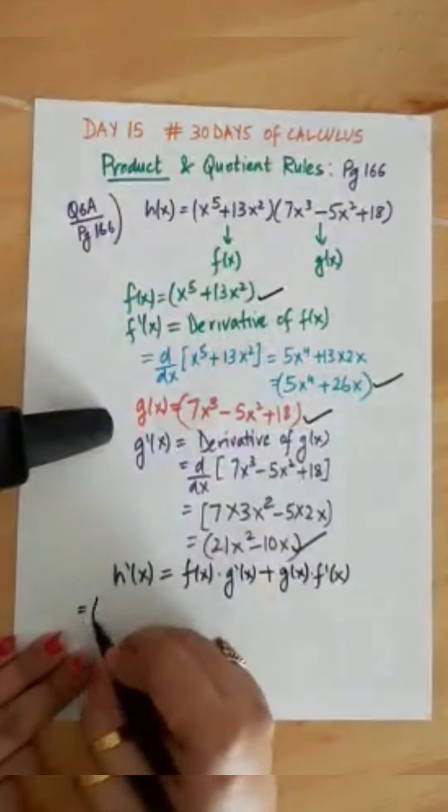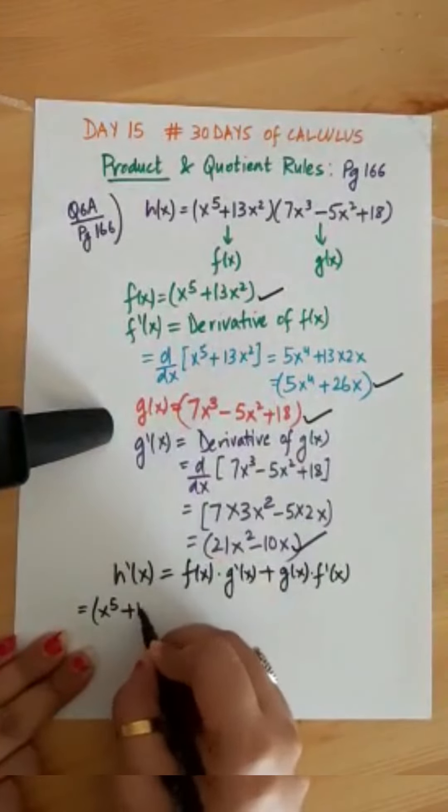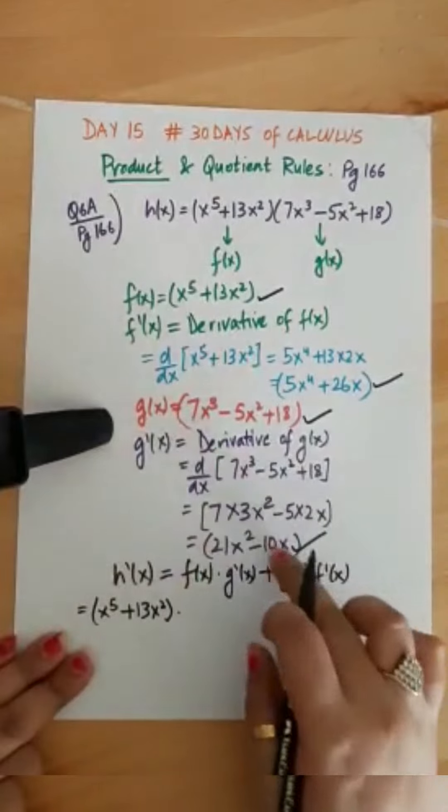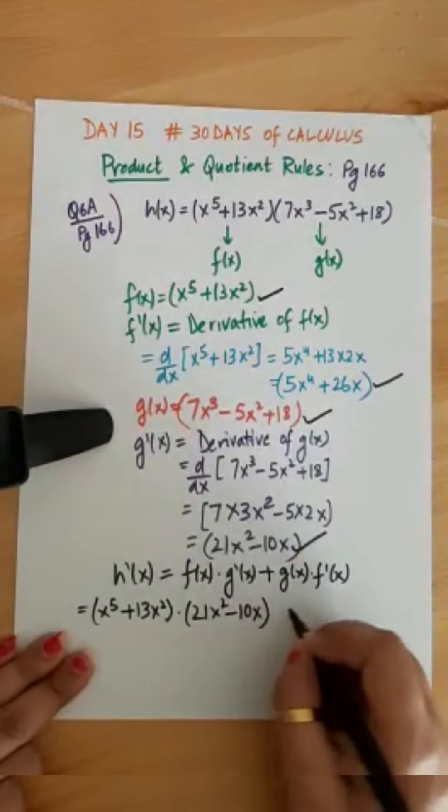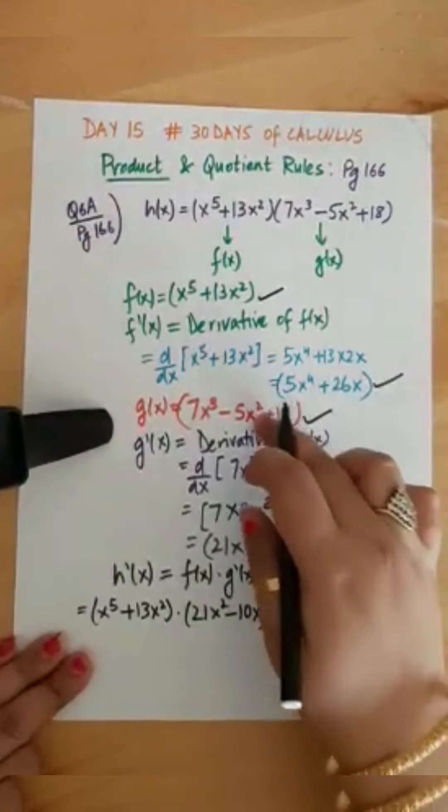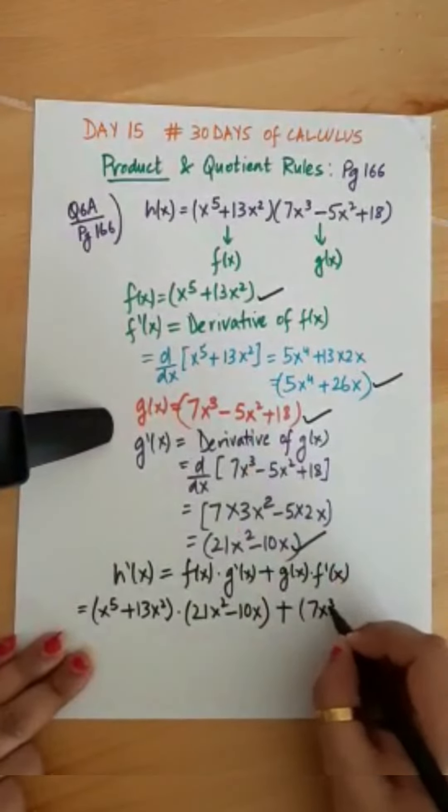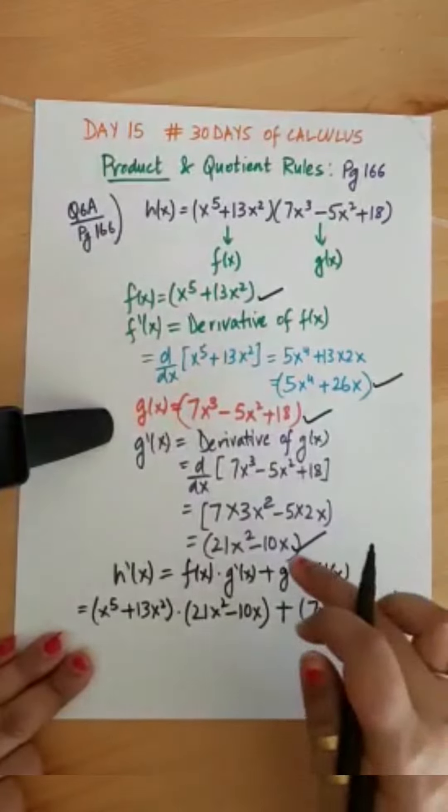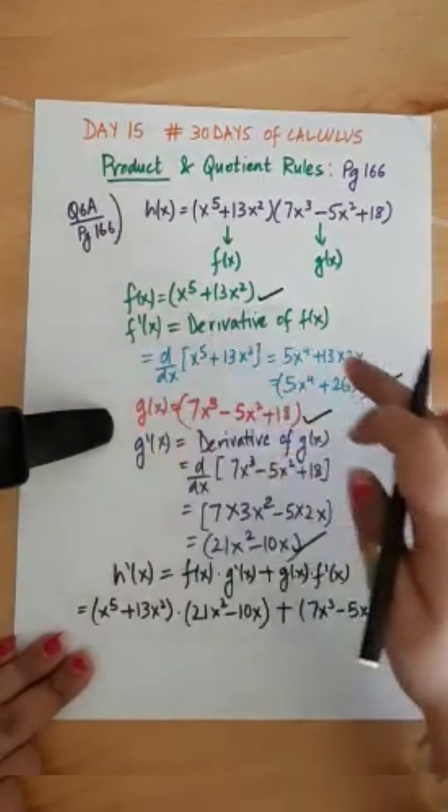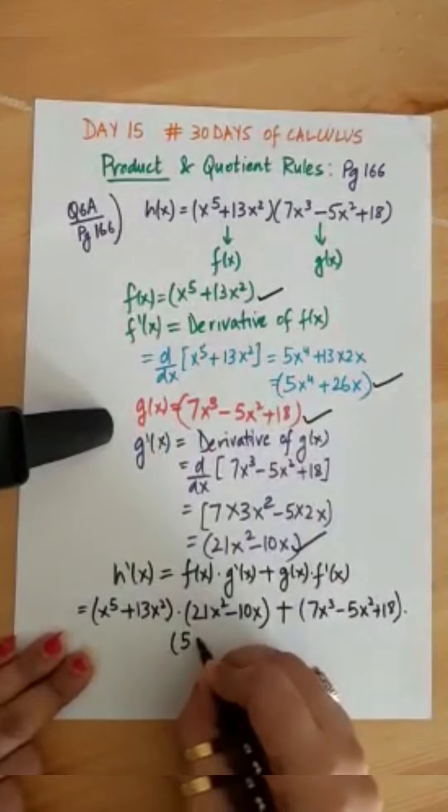So just plug in the functions and I'm putting the values: x to the power 5 plus 13x square multiplied with 21x square minus 10x plus g(x), so that is 7x cube minus 5x square plus 18 multiplied with f prime of x that is 5x to the power 4 plus 26x.